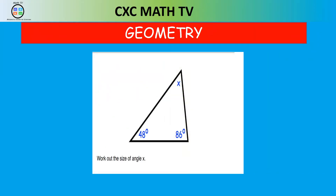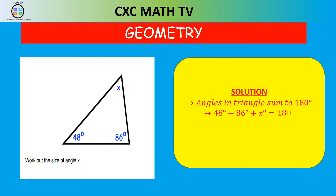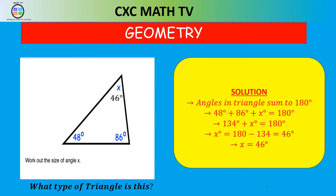Work out the size of angle X. Again, angles in a triangle sum to 180. So 48 plus 86 plus X equals 180. 48 and 86 is 134, so X is 180 minus 134, which is 46 degrees. Now, what type of triangle is this? If categorizing by angle, this is an acute triangle. If categorizing by sides, this would be a scalene triangle, since none of the sides are equal in length and all angles are less than 90 degrees.